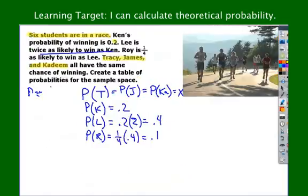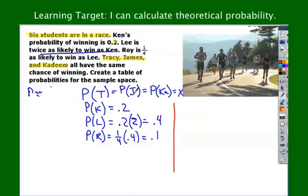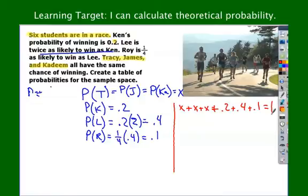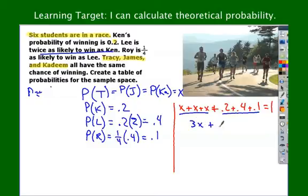If there are six runners in a race, one of them has to win, so we add all their probabilities and that equals 1 or 100%. So: Tracy plus James plus Kadeem — that's x plus x plus x — plus Ken plus Lee plus Roy — 0.2 plus 0.4 plus 0.1 — equals 1. Combine like terms: there are three x's, and the numbers sum to 0.7, so 3x plus 0.7 equals 1.